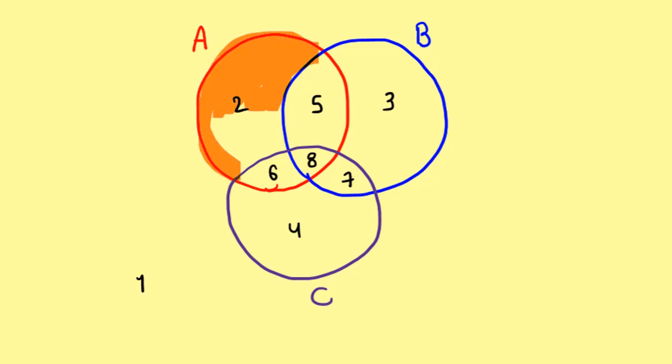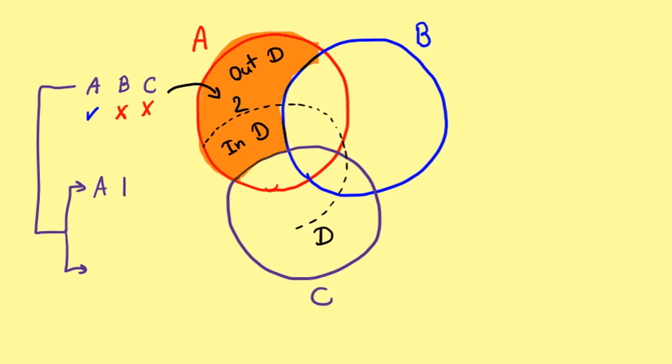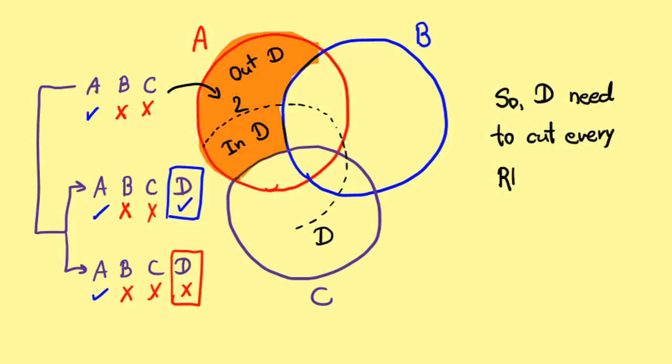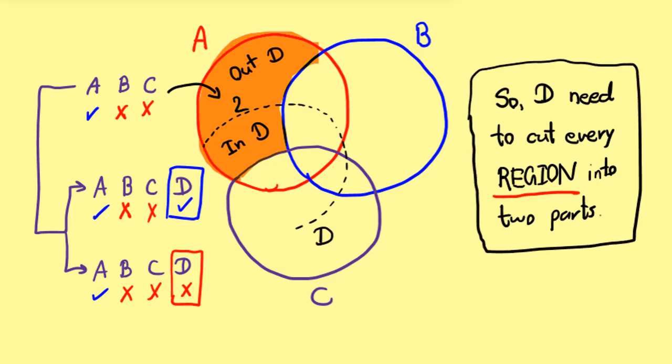Each of these regions carries the information of whether they are inside or outside of a particular set. For example, this region right here lies inside of A, but outside of B and C. And this region right here lies inside of B and C, but outside of A. And so on and so forth. When we add our new set D, we want each of these regions to be split into two pieces, one part lying inside of D, and one part lying outside of D. So when we add our set D, what we need is to intersect every region exactly once, not just circles.